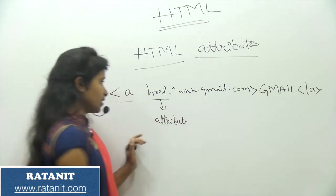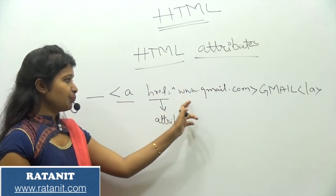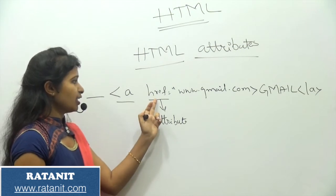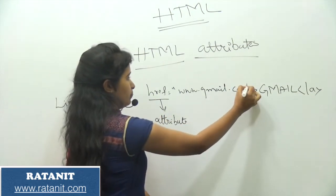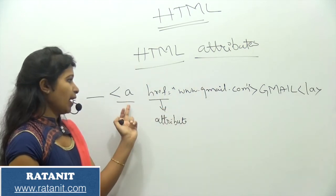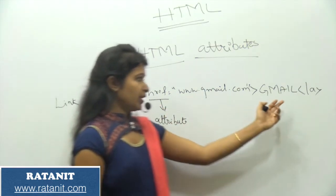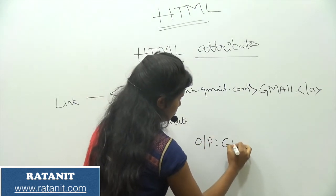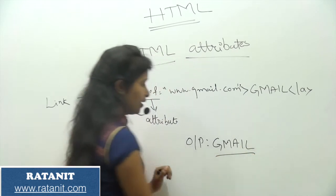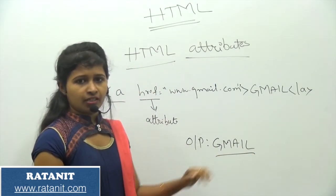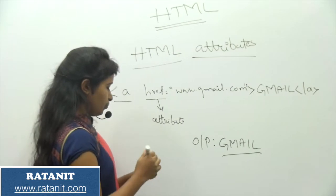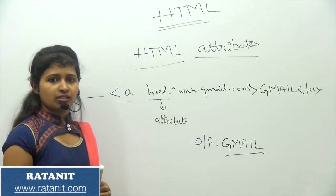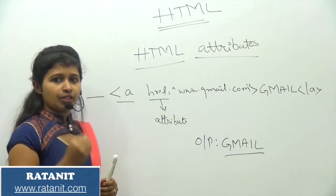This href attribute defines a specific characteristic of the particular tag. For this anchor tag, href means I am including a source URL. That means to display Gmail, if I want to display it, my output will be a Gmail link — underlined and in blue color. This is the way we use href. We have so many attributes and we are going to discuss each specific attribute in a specific way.